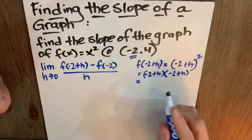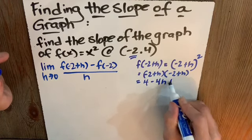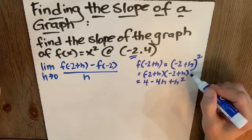It's a good thing we're so good at algebra. To give us 4 minus 4h plus h squared. All I did was I foiled this.